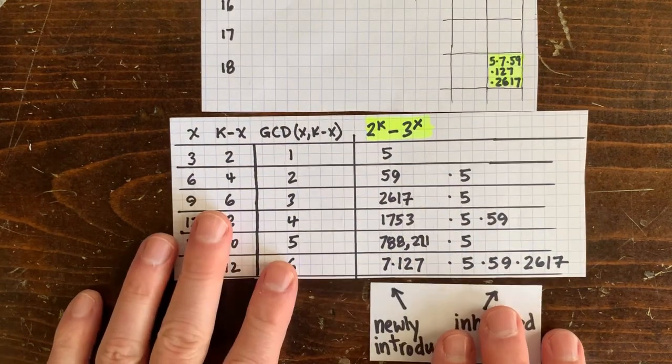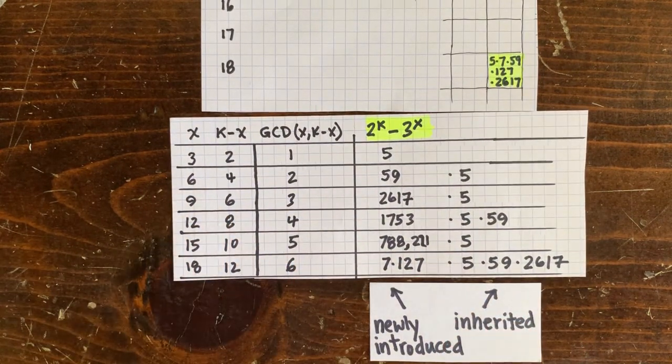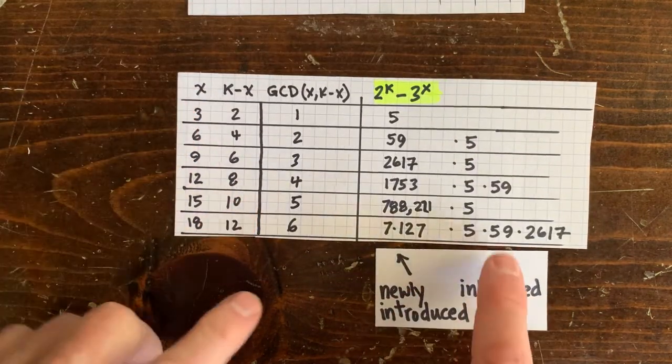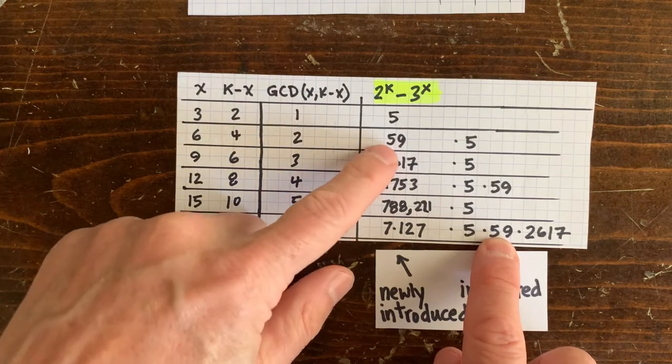So at x equals 18, k minus x equals 12, we inherit the 5 from x equals 3, k minus x equals 2, the 59 from here, and the 2617 from here.